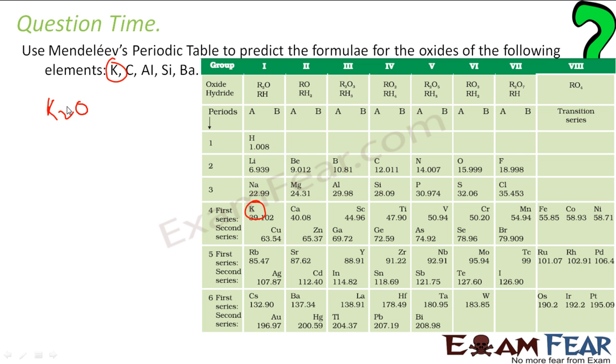It's a group 1. So if you see for group 1, it is R2O form. So K will be in this form: K2O, very simple. Next is C, C is carbon. Carbon is here, carbon is in group 4. Group 4 is RO2 form, right?